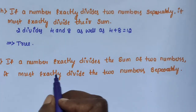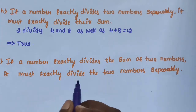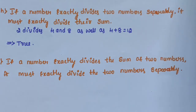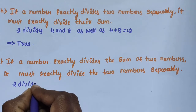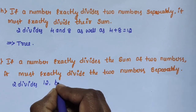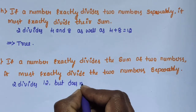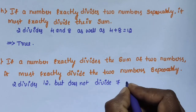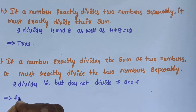Sub-question I: if a number exactly divides the sum of two numbers, it must exactly divide the two numbers separately. This statement is false, because 2 divides 12 but does not divide 7 and 5 separately.